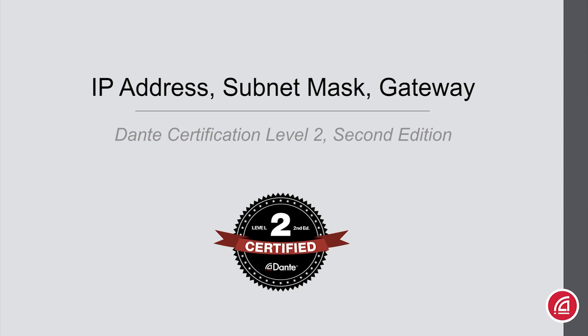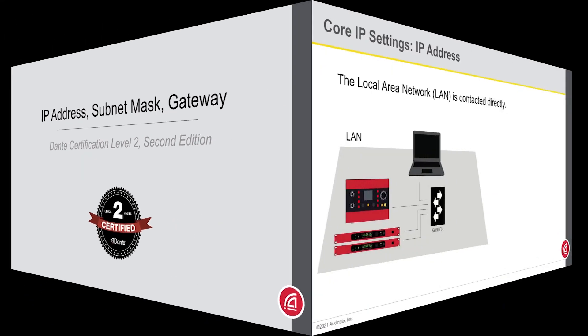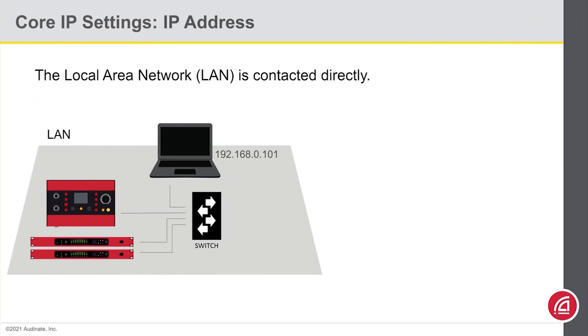Dante Certification Level 2, Second Edition: IP Address, Subnet Mask, and Gateway. Towards the end of Level 1, we talked a bit about IP addresses and subnet masks — two of the most basic settings on any network device. This time around, we'll go into a bit more detail, and we'll use your familiar home network environment as the example.